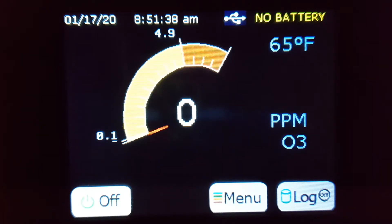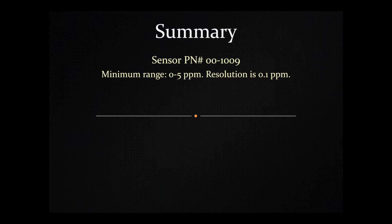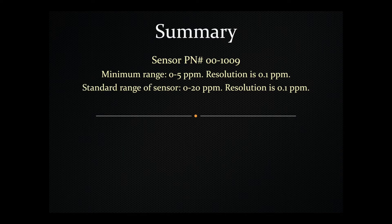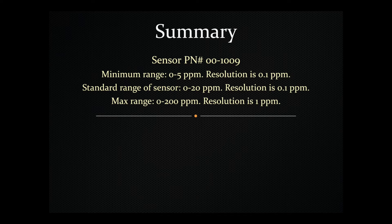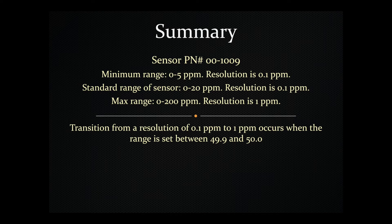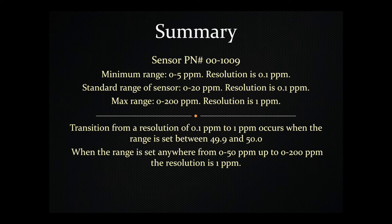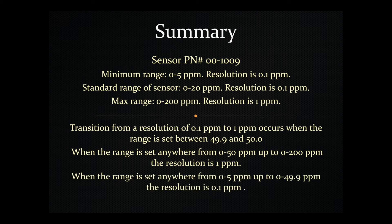To summarize: with a range of 0 to 20 parts per million, the resolution is 0.1 parts per million. With the maximum range of 0 to 200 parts per million, the resolution decreases to 1 part per million. The point at which the resolution goes down is at 50 parts per million. When this sensor is set to any range from 0 to 50 up to 0 to 200 parts per million, the resolution will be 1 part per million. If the range is set anywhere from 0 to 5 parts per million up to 0 to 49.9 parts per million, the resolution will be 0.1 parts per million.